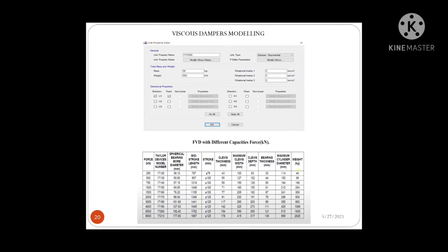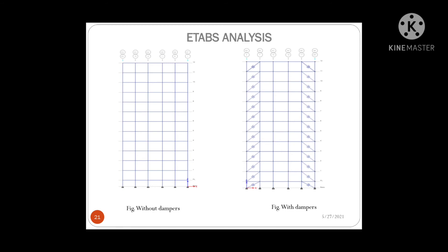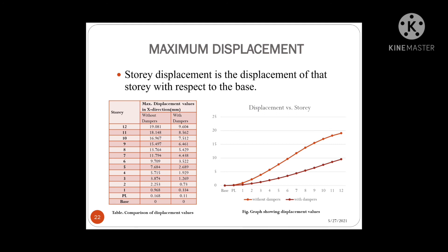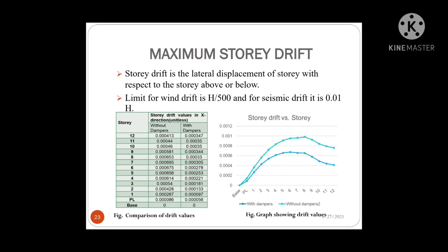Now Chirag will explain the next slides. In the next slide, you can see the elevation of the building with and without dampers. The dampers are diagonally braced from the top storey to the bottom storey at all four corners. Coming to the results, the first parameter compared is storey displacement, defined as the deflection of the storey with respect to the base. Application of dampers reduces the lateral forces acting on the structure, resulting in a significant reduction in displacement values.